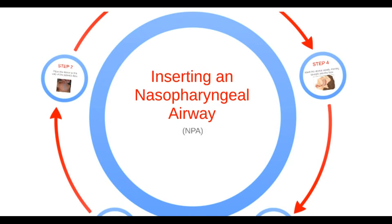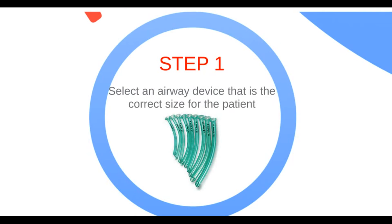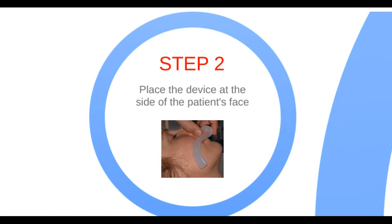Inserting an NPA is rather similar to inserting an OPA. First, select a size-appropriate device for the patient. Next, place the device at the side of the patient's face. Like the OPA, make sure to choose the device that extends from the corner of the mouth to the earlobe. Also, try to use the largest diameter that will fit in the nostril.